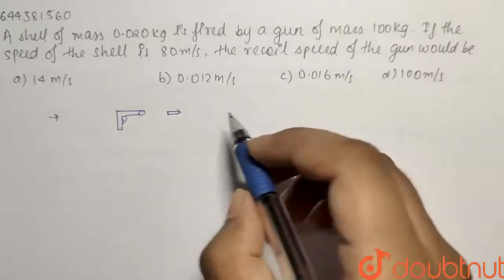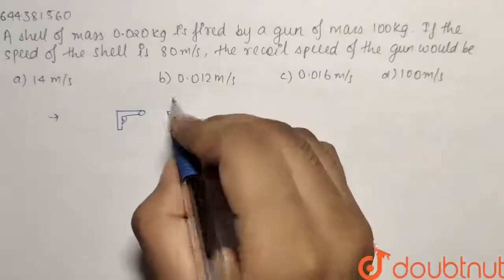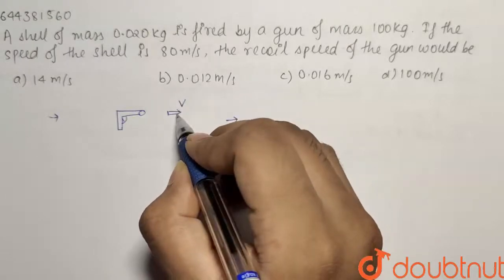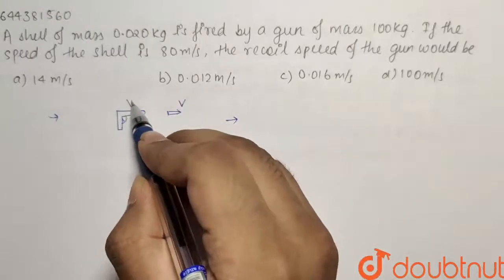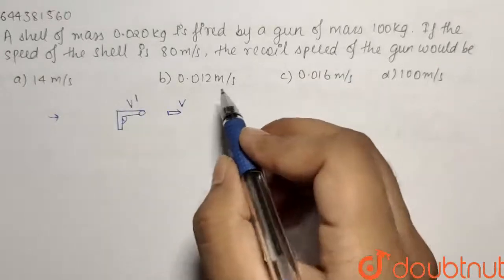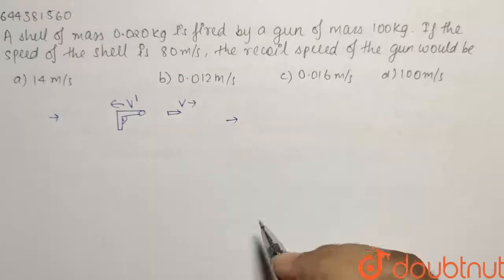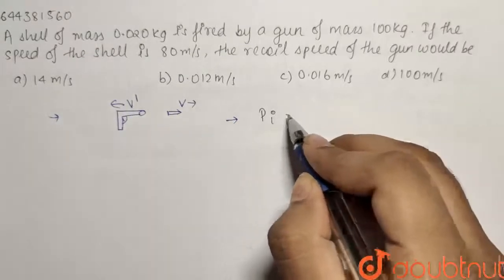So what we can write is for the whole system, let us say that the velocity of the bullet is V and that of the gun is V dash. So this is a recoil velocity so V dash will be in this direction and V will be in this direction. So we can conserve momentum.